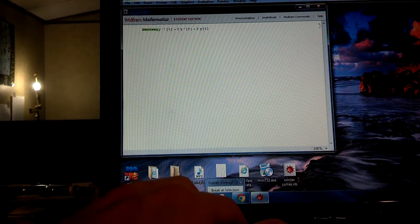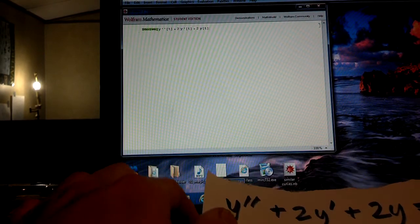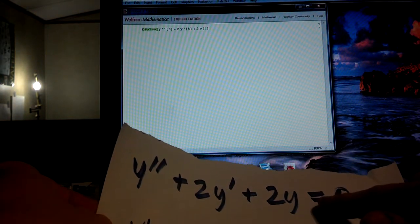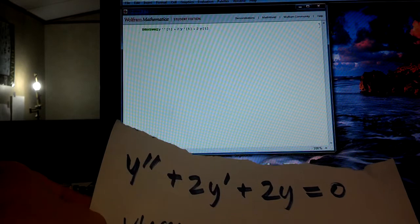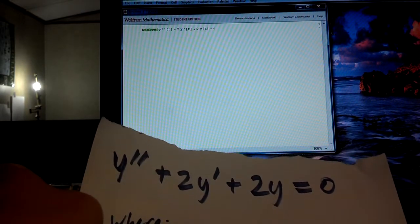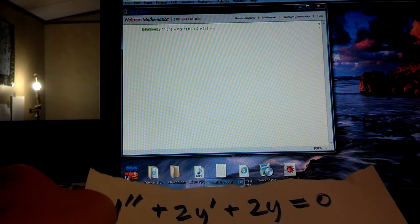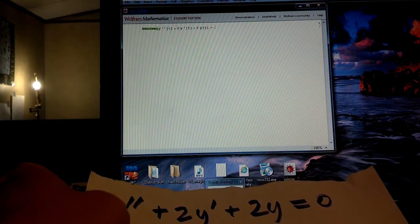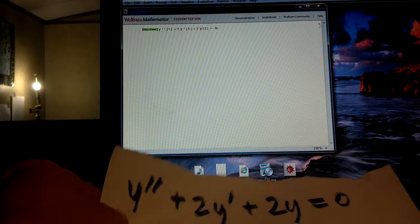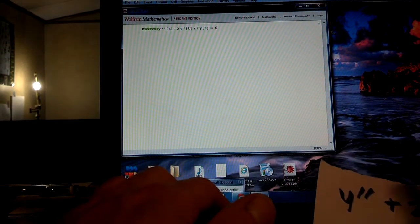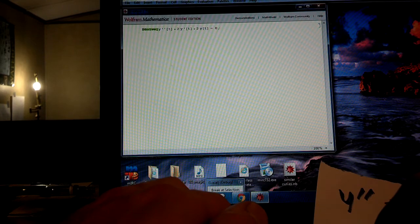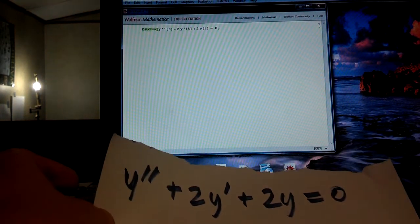Plus 2y of t, and now this is a key thing. Whenever I want to set something equal to 0, I gotta do double equal, so I just hit the equals button twice, now hit space, and then type 0. If you don't do that, it gives you troubles. So now I got my differential equation typed in.